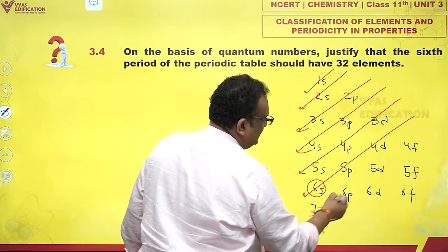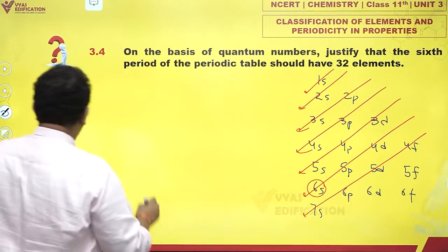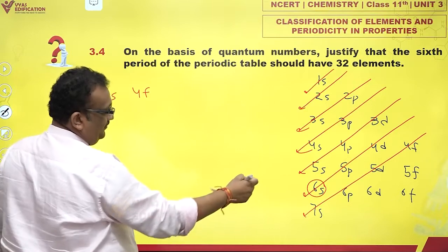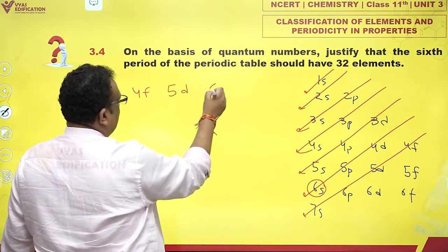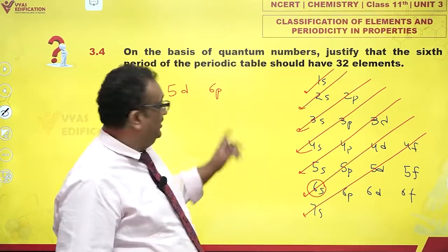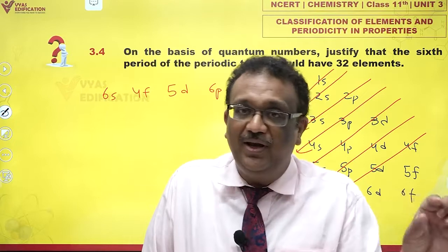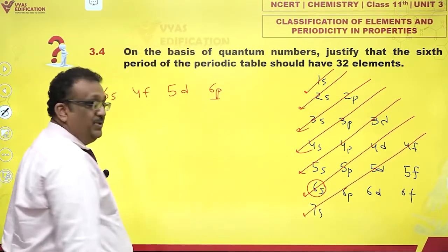Once I have 6s, then I have 4f, 5d, and 6p. So 6s, 4f, 5d, and 6p. And at the end of the p block, if you remember, you get a noble gas and the same period ends. So it begins with 6s, it ends with 6p.